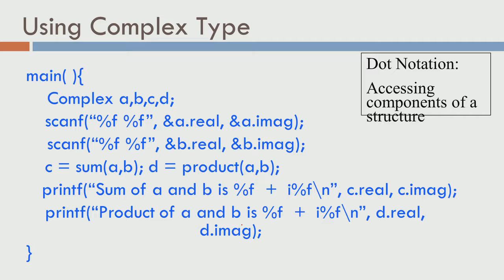Let us look at how this might be done. In the first line, we do a declaration for four complex numbers A, B, C, and D. We are going to take complex number C as the sum of A and B, and complex number D as the product of A and B. We first go ahead and scan the real and imaginary parts of A and B. Then: C equals sum of A comma B, which should add up the corresponding real values and put it as C's real value, add the imaginary values and put it into C's imaginary value. We may also want to do product of A comma B and print sum and product.